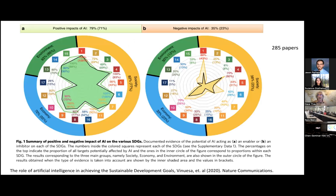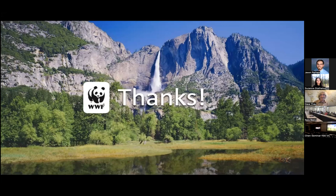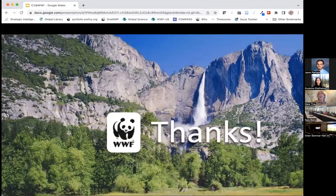There's a nice paper from Nature Communications mapping where AI can have positive and negative impacts on SDGs. Goals 14 and 15 — the environment section — show lots of positives and not many negatives. This paper has many other interesting use cases worth looking at.